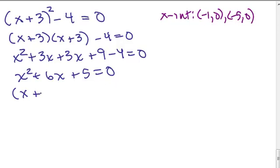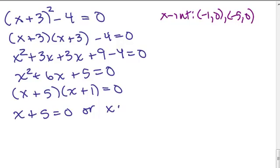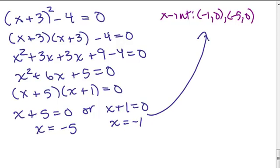This factors easily: (x+5)(x+1) = 0. Set each factor equal to 0. Subtract 5 from both sides for this one. Subtract 1 from both sides for this one. And you get the same intercepts, the same x-intercepts we did doing it the other way.